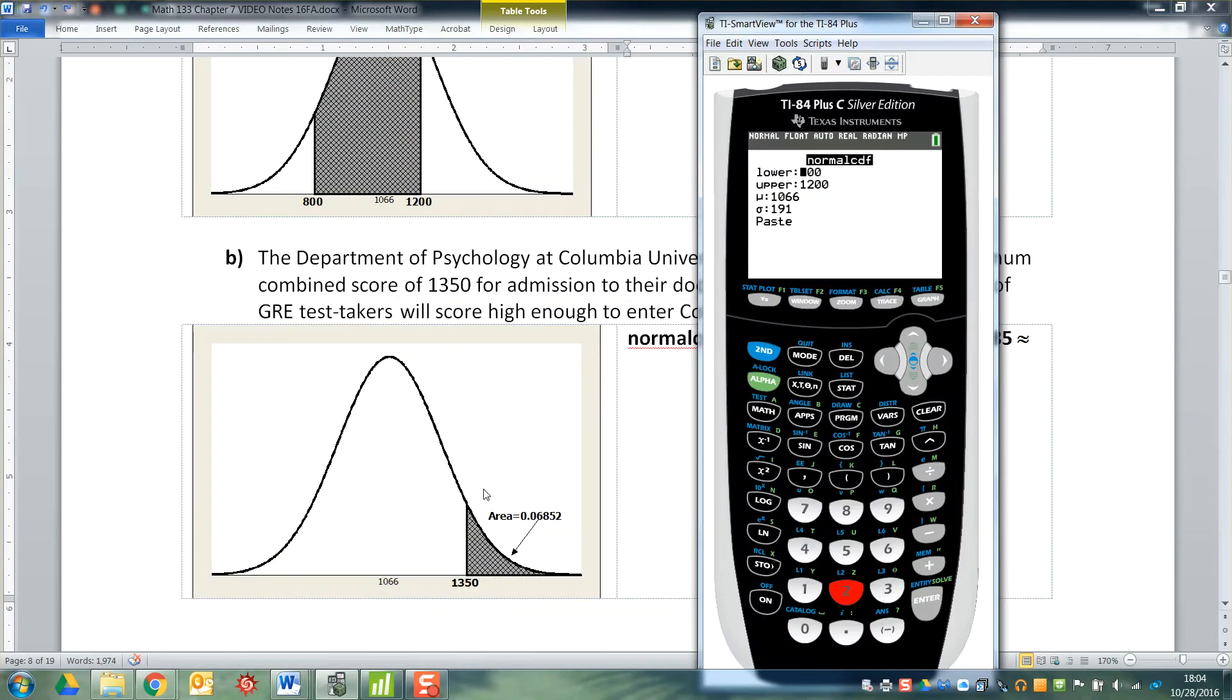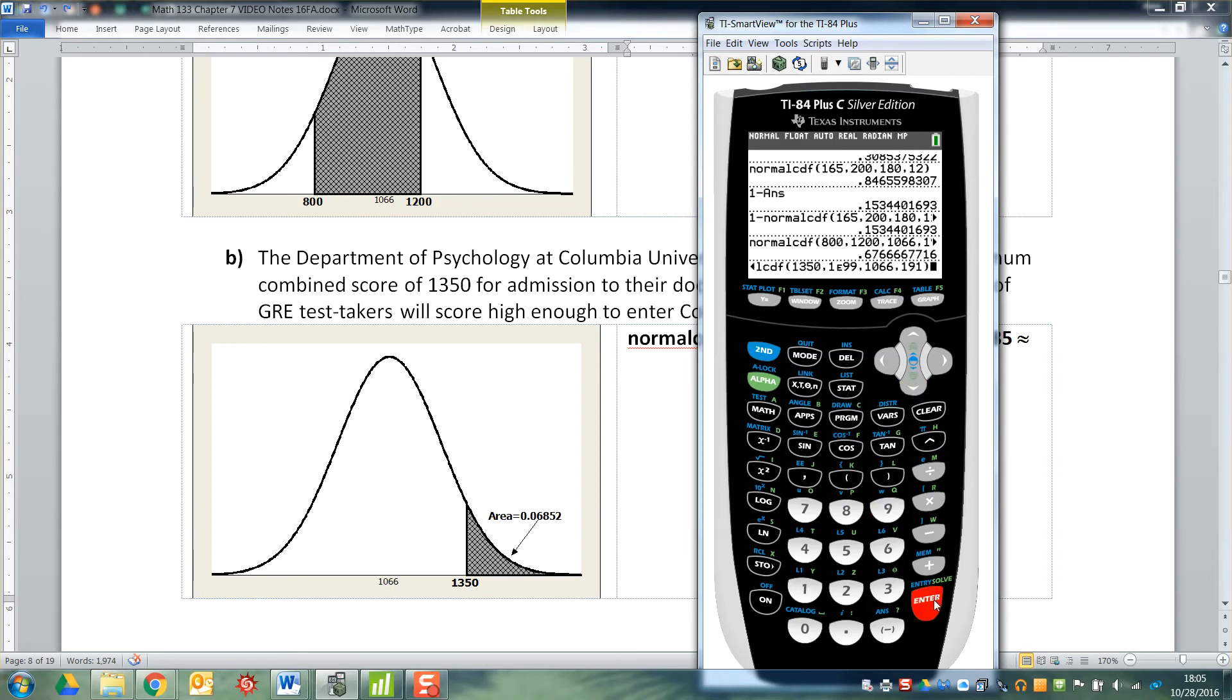So we want to say positive infinity, but we can't. So we say 1350 is my lower edge. That's my left hand edge of what I've shaded. And then 1E99, that E is above your comma button. It's a blue one, and it looks like a double E. There are two E's there. That's the exponentiation button. Then you hit 99. Then 1066 and 191 are the same. You press enter and you get 0.0685.